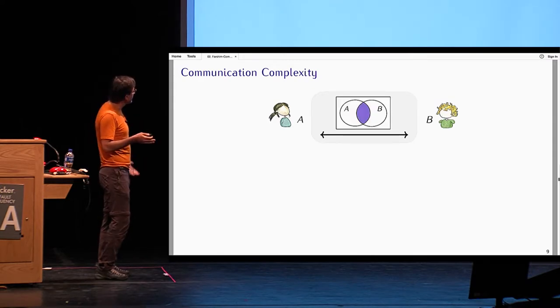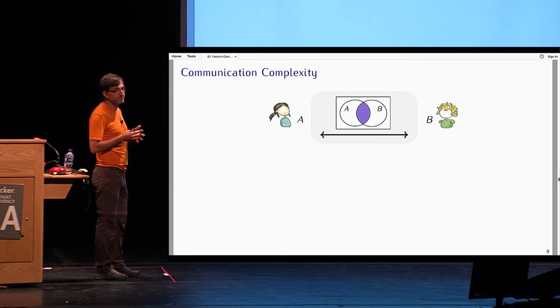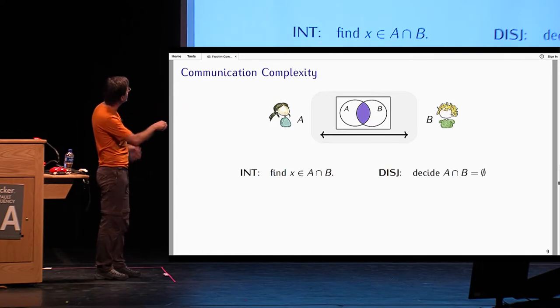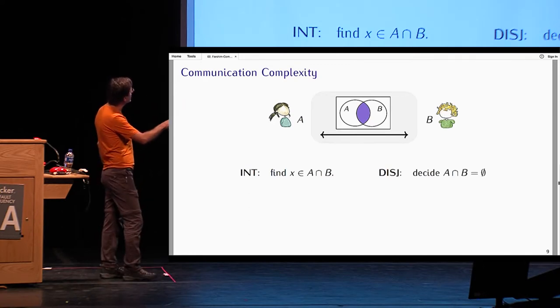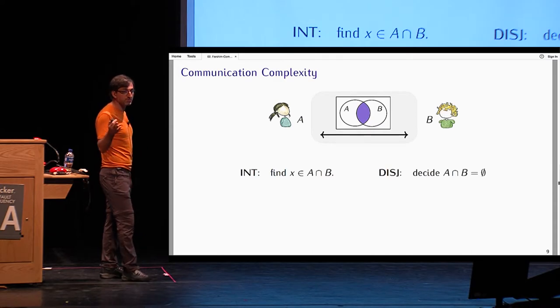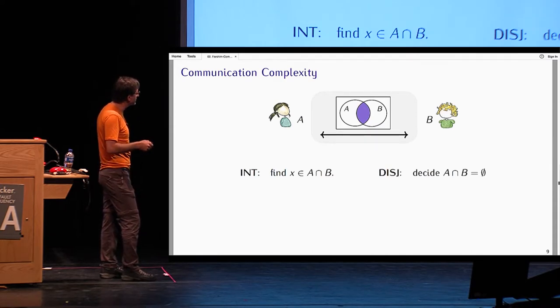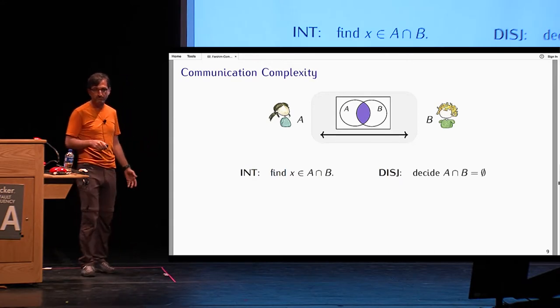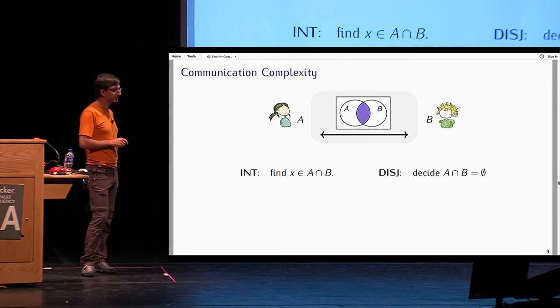Privacy is not a concern here. They just simply want to compute a function F. The communication complexity of this protocol is the number of bits exchanged between Alice and Bob. Of particular interest to us is the communication complexity of two problems: the set disjointness and the set intersection problem. In the set intersection problem, the task is to find an X in the intersection of these two sets A and B. And the set disjointness problem, which is a widely studied problem, the task is to decide whether this intersection is empty or not.